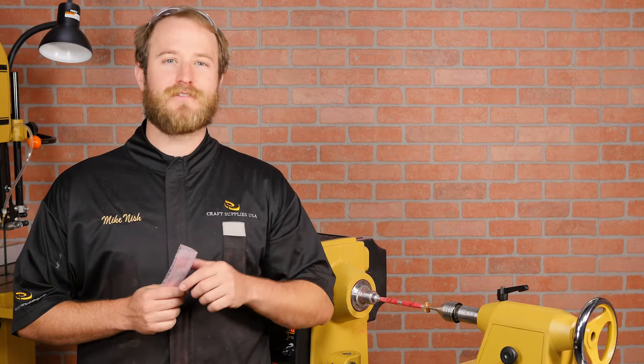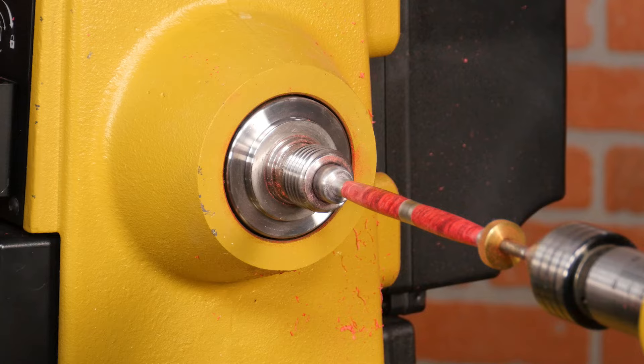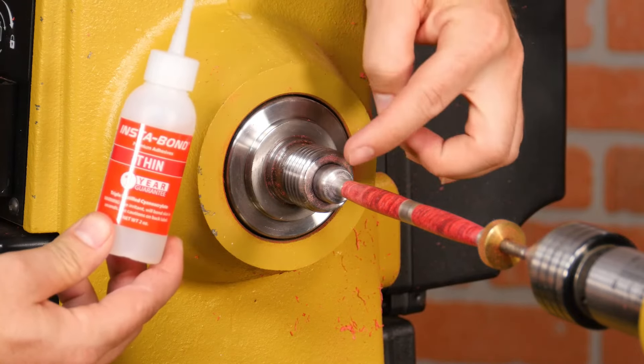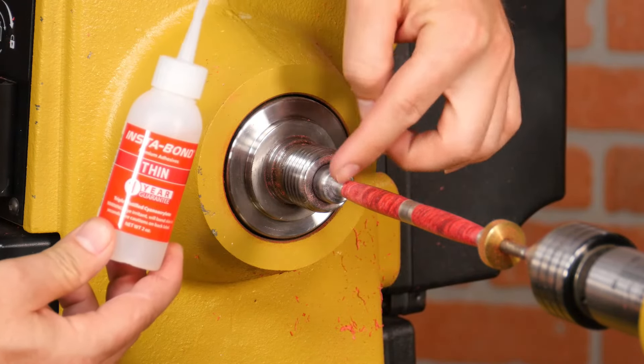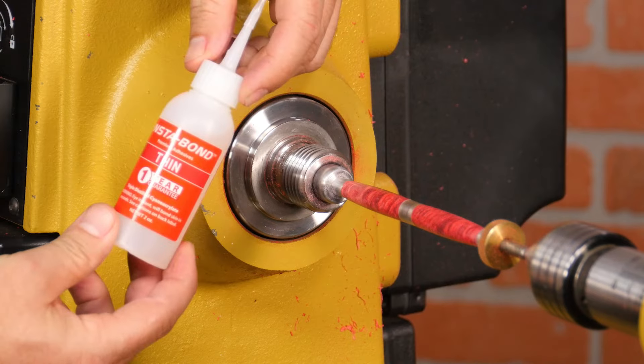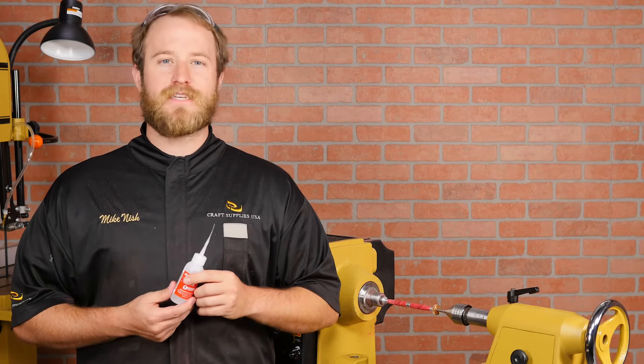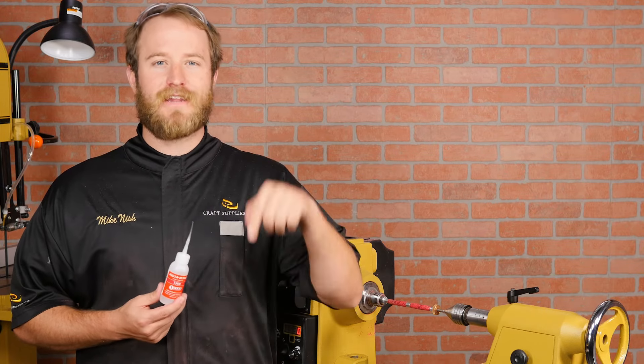Once you're done sanding, choose a finish for your pen that looks good but will hold up well to repeated handling. My preferred finish and the most durable is a CA pen finish, which is applied by building up thin layers of CA or super glue. We'll cover the basics here, but if you want a more in-depth video on CA pen finishing, we'll have a link here and in the description below.